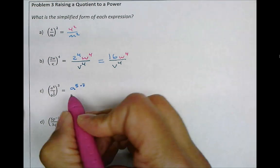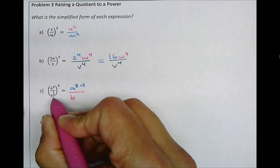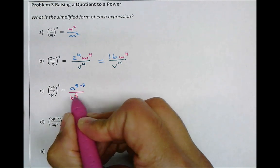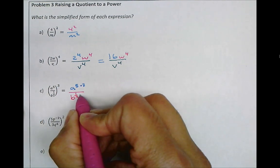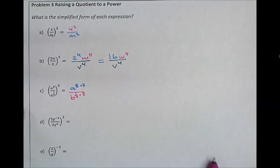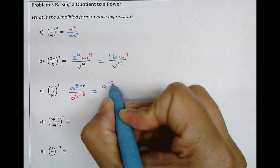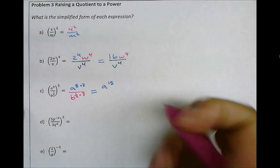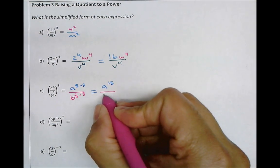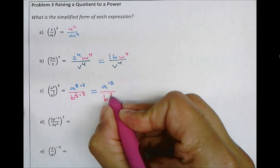And this will be over b to the power of 1 half raised to the power of 3 means we multiply. So this simplifies to a to the power of 15 divided by b to the power of 3 halves.